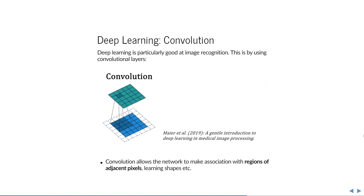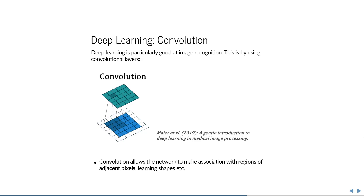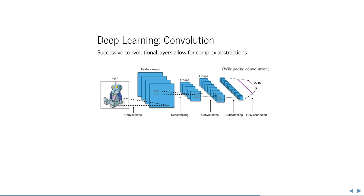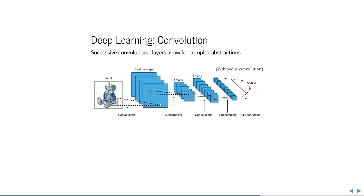Deep learning is particularly good at image recognition because it also uses convolutional layers. A convolutional layer conceptually is very simple — it takes a group of pixels from the previous layer and pools them together into the value of the next layer, so adjacent pixels are somehow related to each other, allowing the network to make associations with different regions of the original input image. If you do this for many layers — compressing groups of pixels, then convolving again and again — you can make more and more complex abstractions, and that is how these shapes are learned.